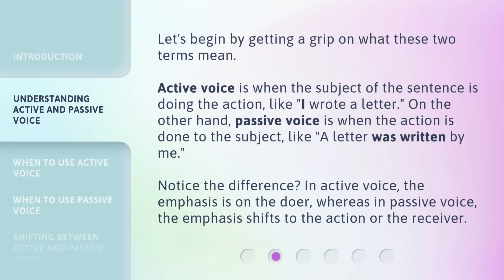Let's begin by getting a grip on what these two terms mean. Active voice is when the subject of the sentence is doing the action, like, 'I wrote a letter.' On the other hand, passive voice is when the action is done to the subject, like, 'A letter was written by me.' Notice the difference? In active voice, the emphasis is on the doer, whereas in passive voice, the emphasis shifts to the action or the receiver.